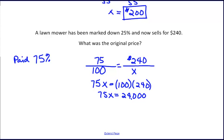If I divide both sides by the 75, so that I can get my x alone, I will have the answer to the problem. By dividing that out, we discover that the original price of the mower was $320. That's a lot.